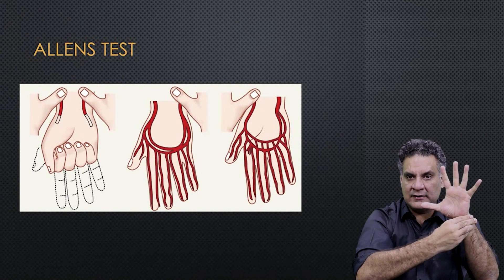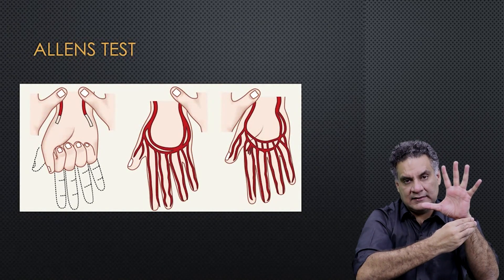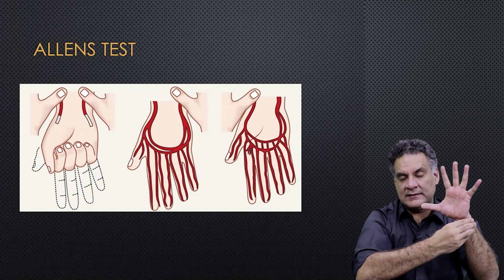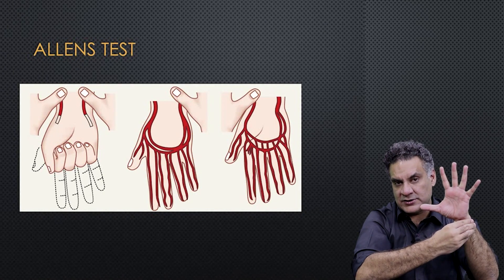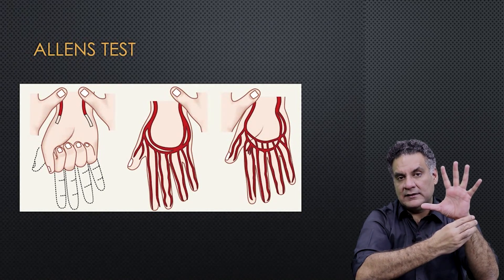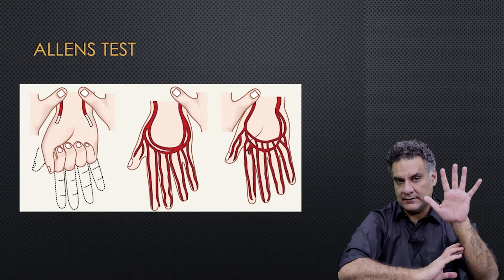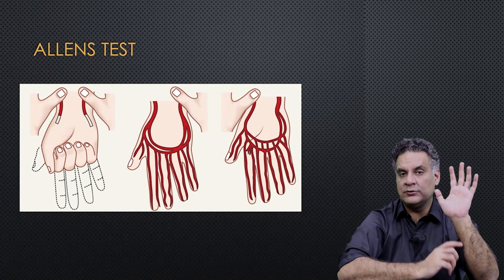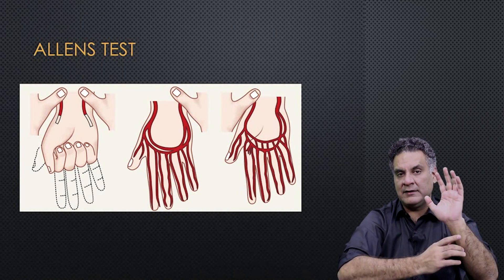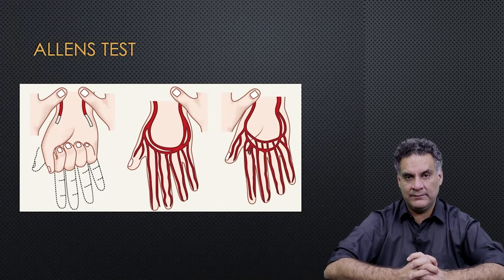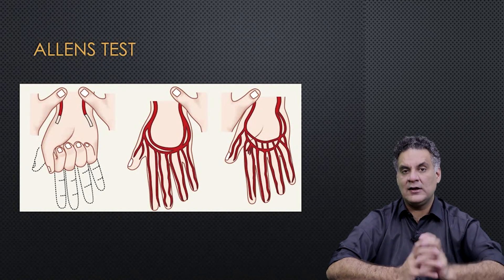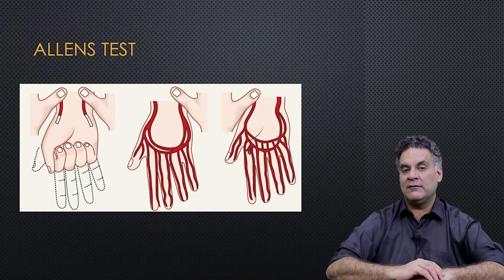Now I release the ulnar circulation while maintaining radial compression — is the ulnar artery patent? If yes, it means I can take samples from the radial artery or do radial artery cannulation safely. If there is a problem in either of them, the hand will not be profusely circulated, and I cannot do cannulation or sampling from the arteries on either side. This is Allen's test, whose video came as a short GIF in November 2019 AIIMS exam.